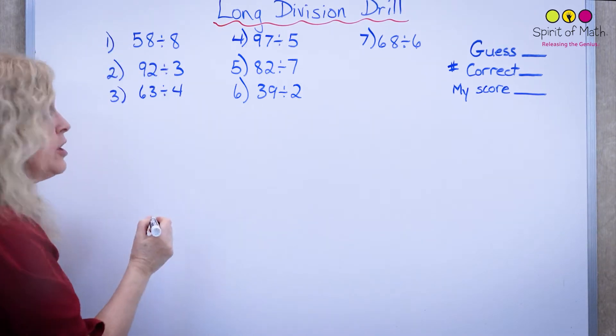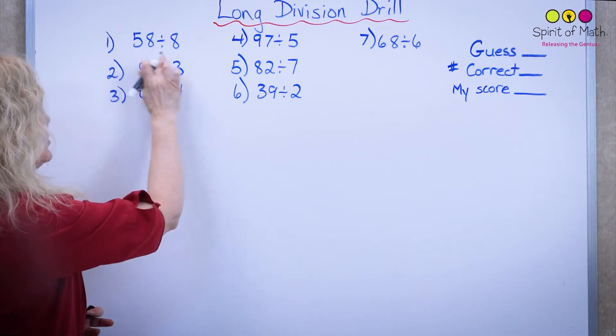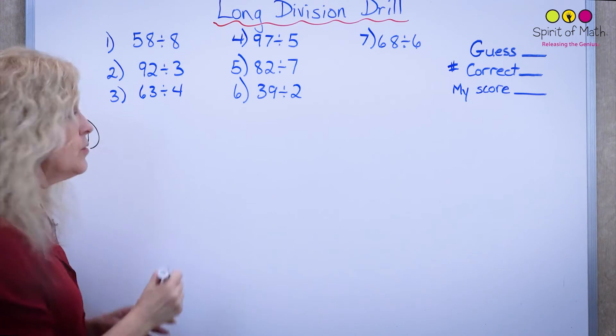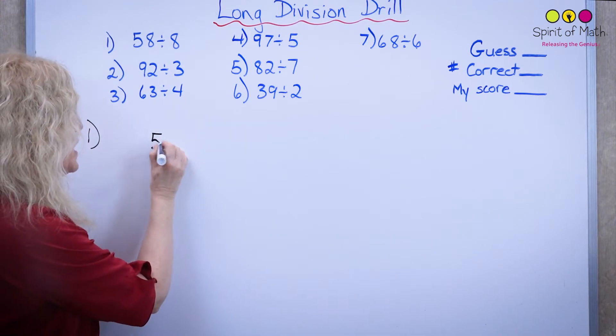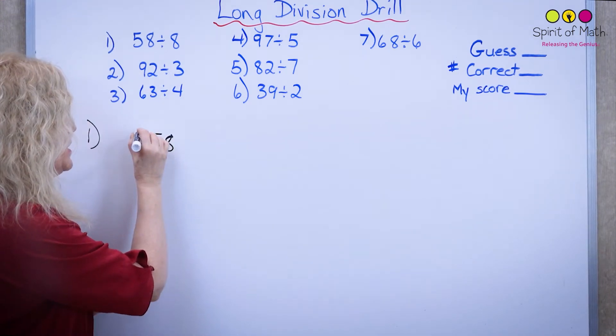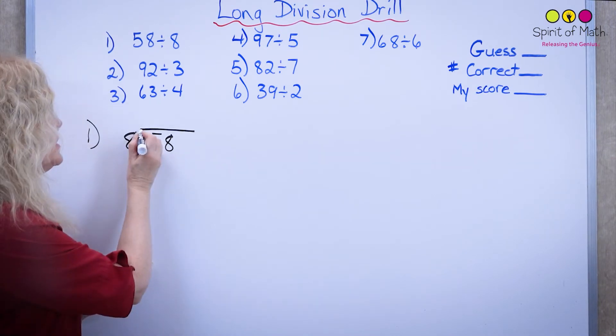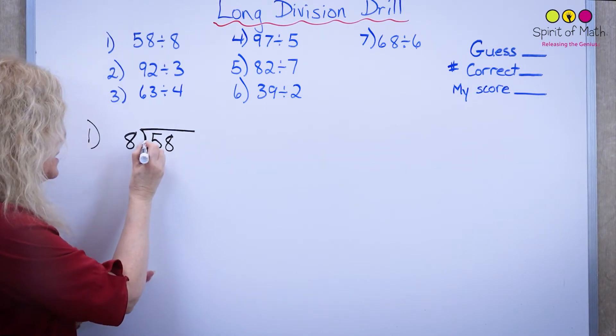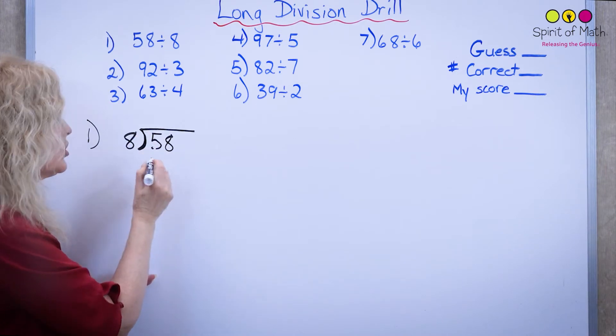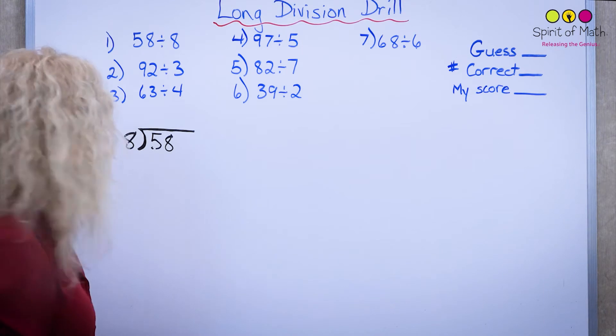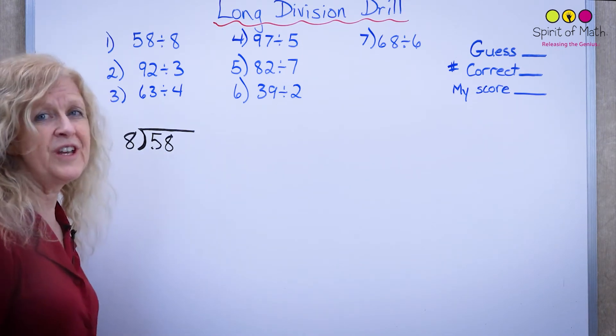So we start off with this first one. Number one says 58 divided by 8. So you take that 58 and you divide it by 8. That's the way that you show it. Notice this looks sort of like a bracket. It is curved and then this is a straight line along the top.